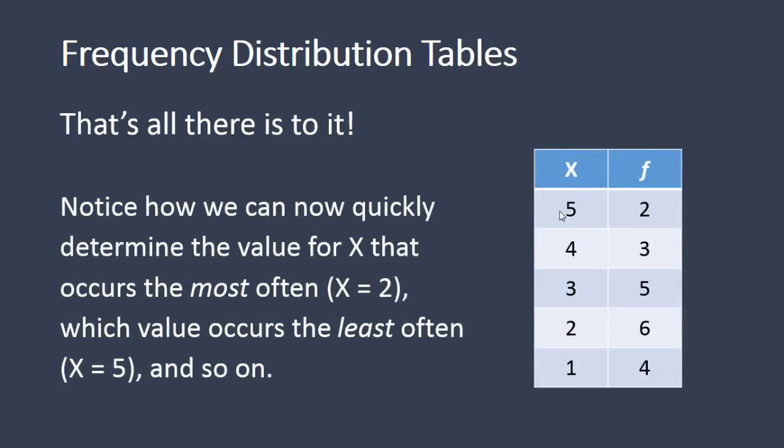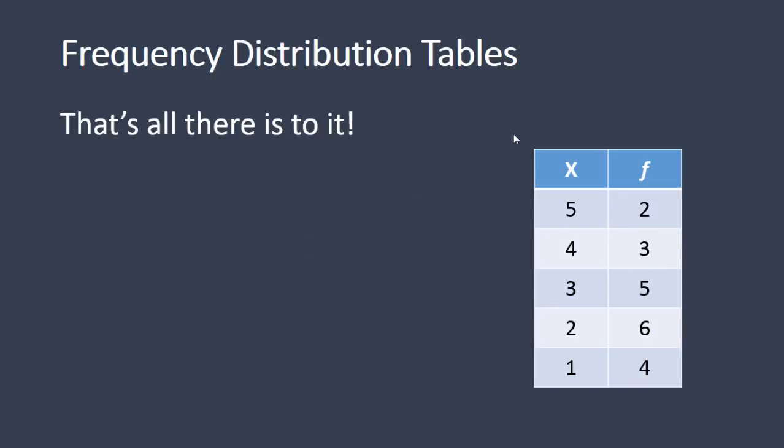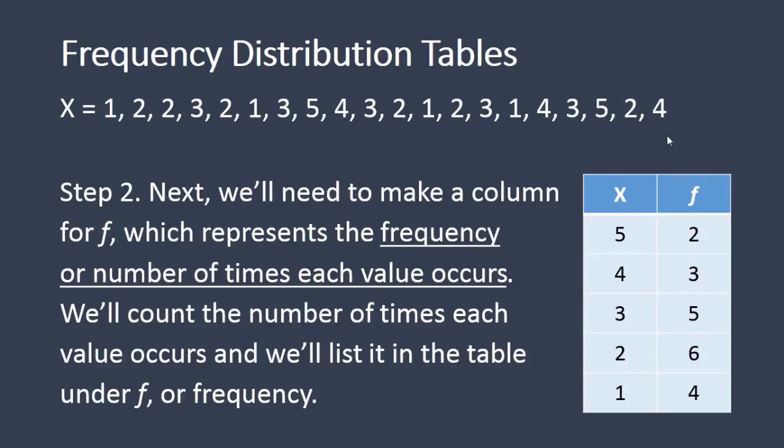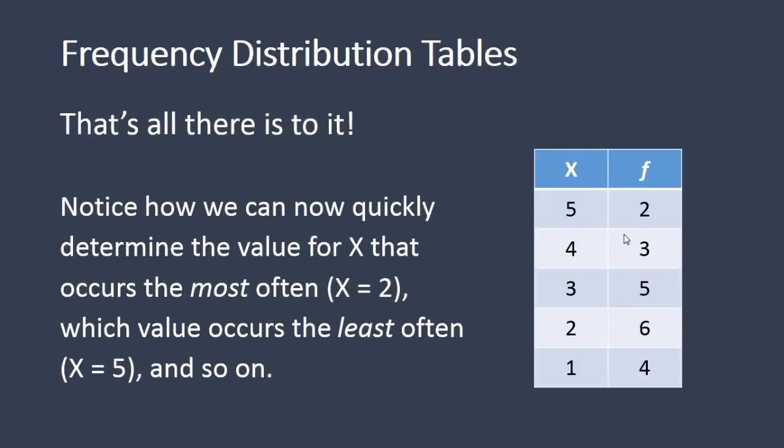And that's really all there is to it. So in this frequency distribution table, once we have our values summarized, there's some advantages here. As opposed to when the values were all listed out, with our table we can now draw some quick conclusions about the data. For example, which value occurs the most often? Well, for that we would look under f or frequency. And notice here, the value of 6 is the largest in this column. So that means that the X of 2 occurred the most often in this data set, as it occurred 6 times. So another way to say this is, the mode is equal to 2.